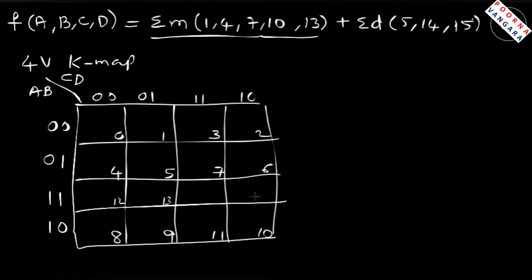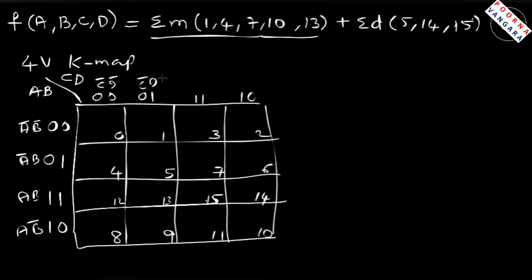The row labels correspond to: 00 = A̅B̅, 01 = A̅B, 11 = AB, 10 = AB̅. The column labels correspond to: 00 = C̅D̅, 01 = C̅D, 11 = CD, 10 = CD̅. So first let us place the minterms that give output 1.